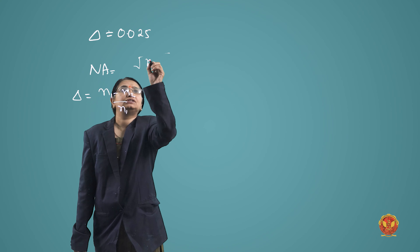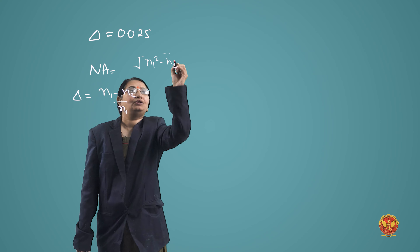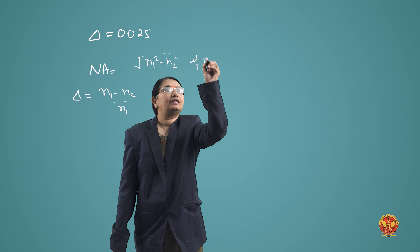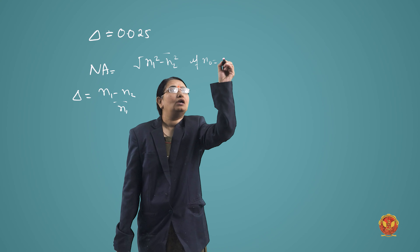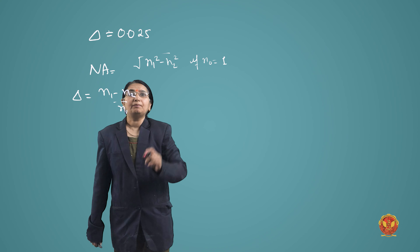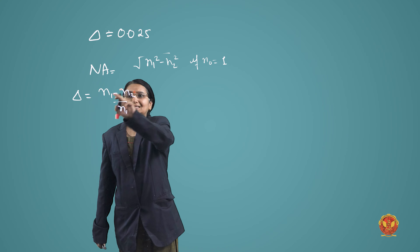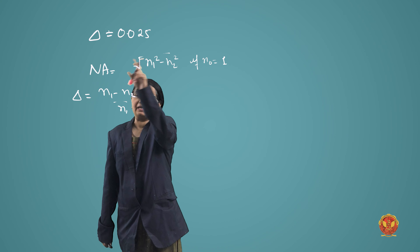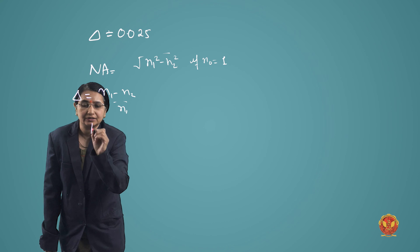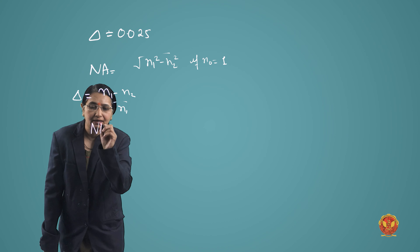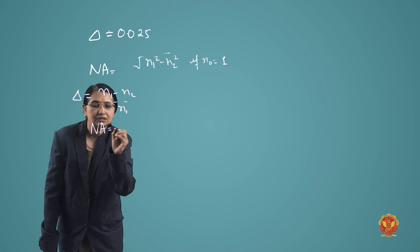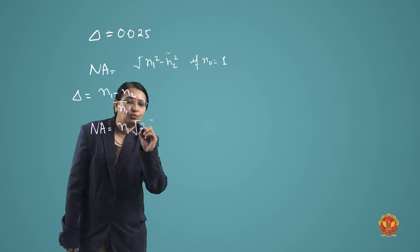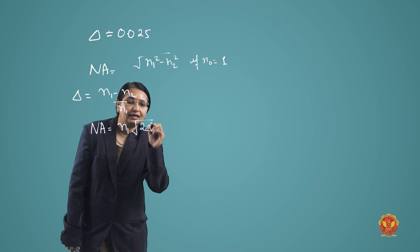And numerical aperture is the square root of (n1 squared minus n2 squared), when n0 is equal to 1. When you substitute the values into this expression and rewrite the derived formula, numerical aperture equals n1 times the square root of 2·delta.